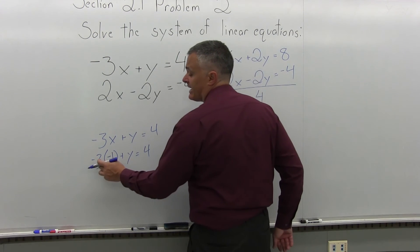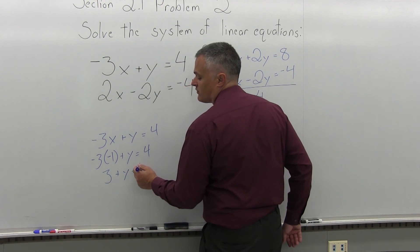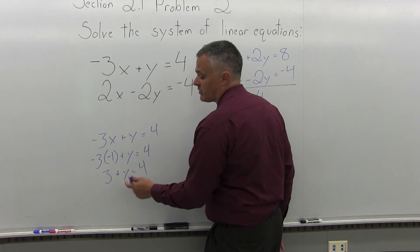And now when I multiply negative 3 times negative 1, I get positive 3 plus y equals 4. And at this point, I can see the y must be 1. 3 plus 1 would make 4 equals 4.